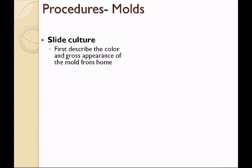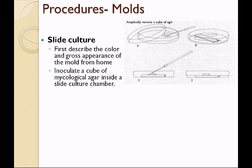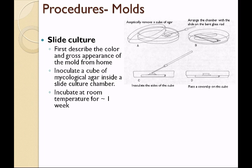We will also be doing a slide culture on the mold that you brought from home. First describe the color and gross appearance of your mold. Then the slide culture is made by taking out a cube of agar from a plate of mycological agar. You'll arrange the chamber with a slide sitting on a bent glass rod, with a piece of filter paper inside the glass petri dish. Inoculate the sides of the cube with the mold from home, flame a cover slip and place it on top of the agar cube, replace the lid, add some water, and incubate. It will take about one week for the mold to grow sufficiently.